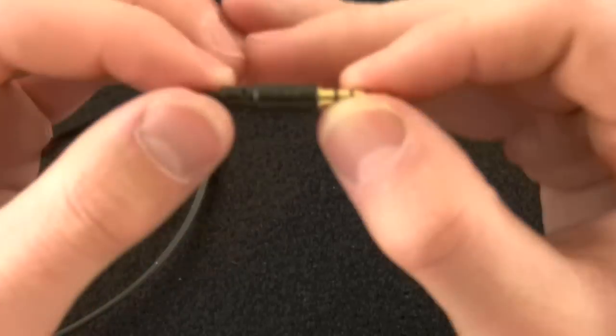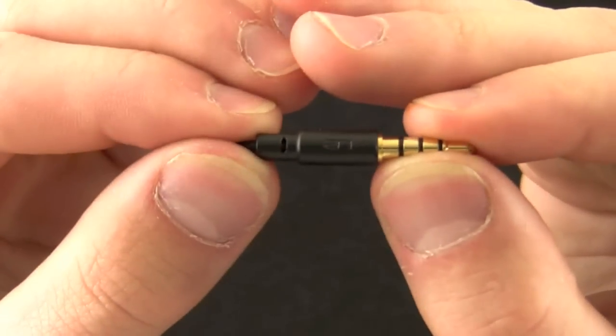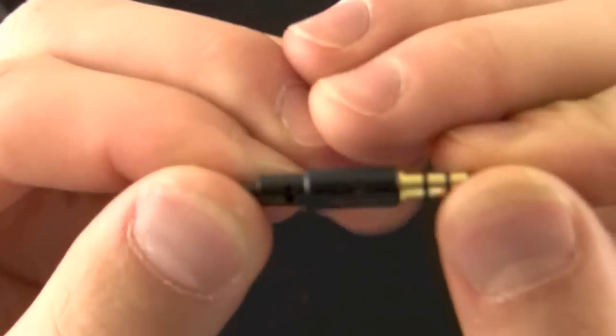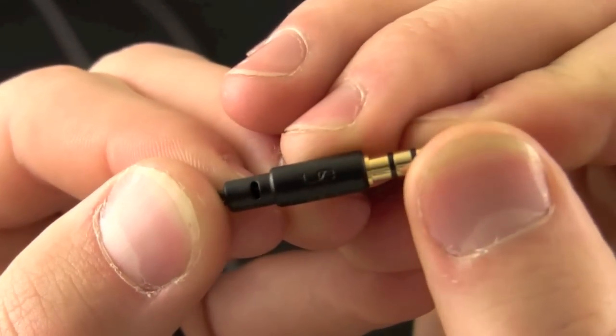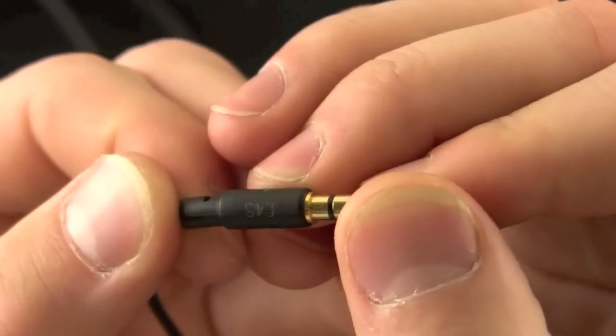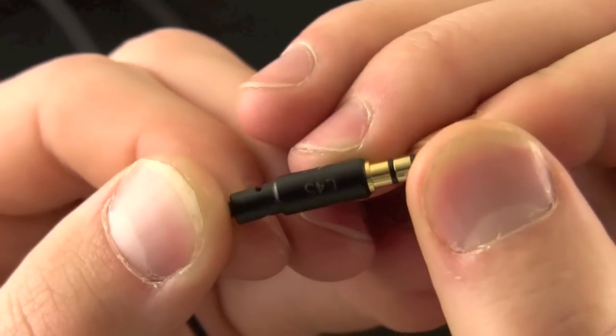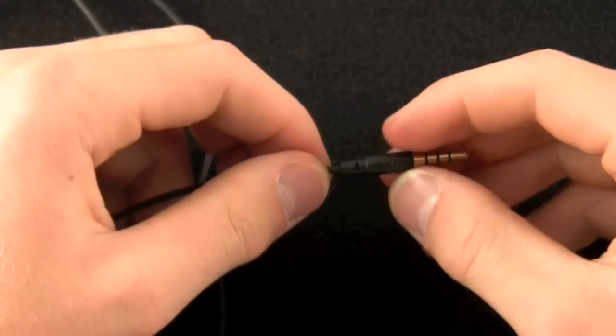And then you'll see the Ultimate Ears logo with the engraving of either the model number or the serial number, I don't know, but it is C45 on these headphones. So I'm assuming that's the model number, but there you go.